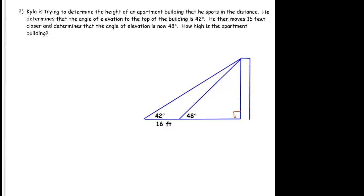Kyle is trying to determine the height of an apartment building that he spots in the distance. He determines that the angle of elevation to the top of the building is 42 degrees. He then moves 16 feet closer and determines that the angle of elevation is 48 degrees. How high is the apartment building? It always feels like you didn't get enough information to solve for H, but you do.